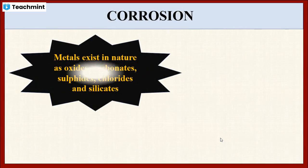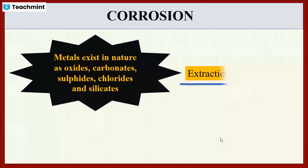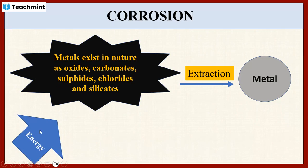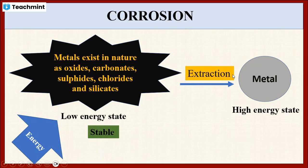Normally in nature, metals are present in the form of compounds such as oxides, carbonates, sulfides, chlorides or silicates. During the metallurgy process, these metallic compounds are converted into their metal form. This extraction process requires very high energy. Hence, these metallic compounds are in the lower energy state whereas these extracted metals are in the higher energy state.